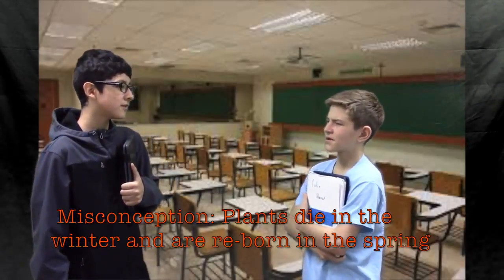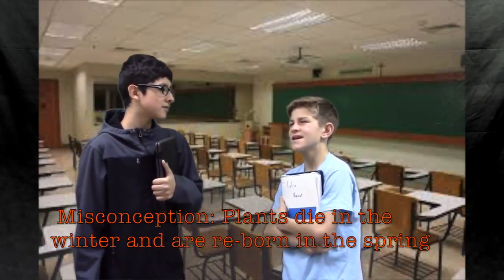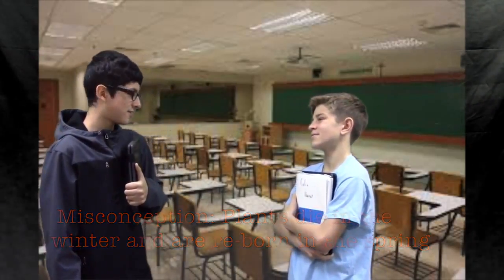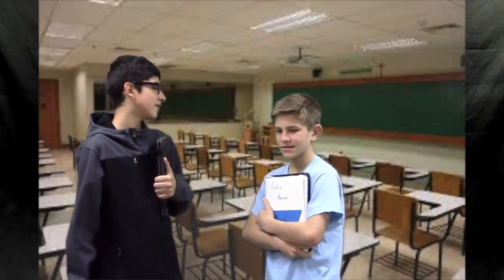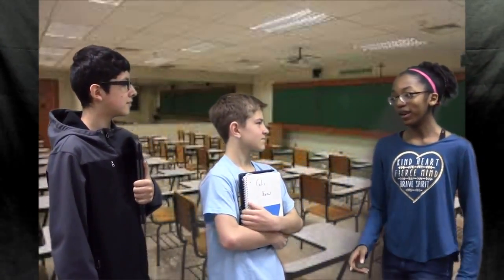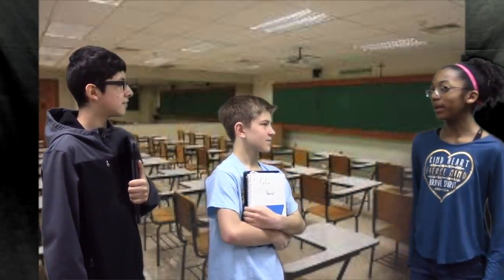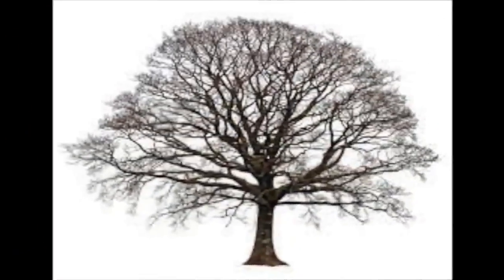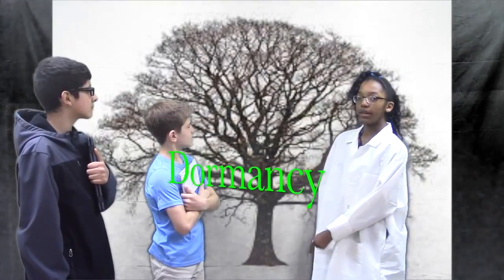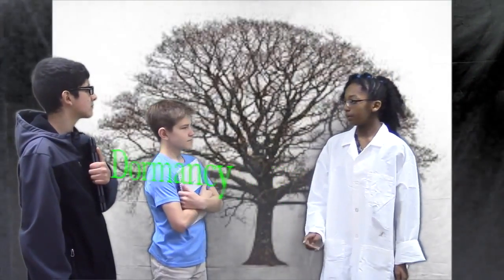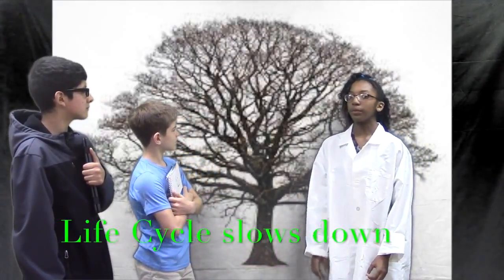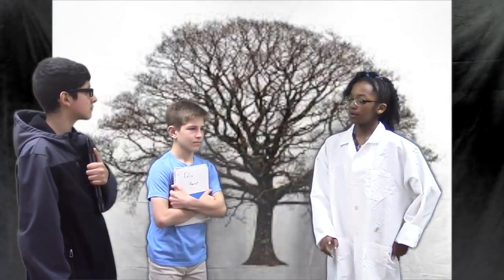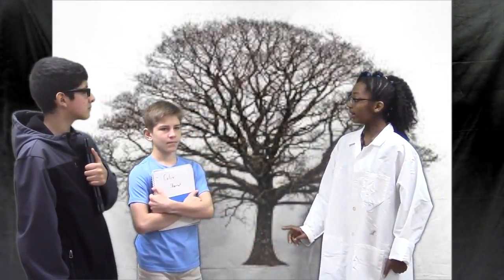They go into a phase called Dormancy. Well, your little friend here is right. Let me show you in my NASA lab. There's plants in dormancy. Dormancy is when a plant's life cycle is slowed down. They usually go dormant when conditions are too harsh for them. It's important to remember that they don't die at this time — their life cycle is just slowed down.